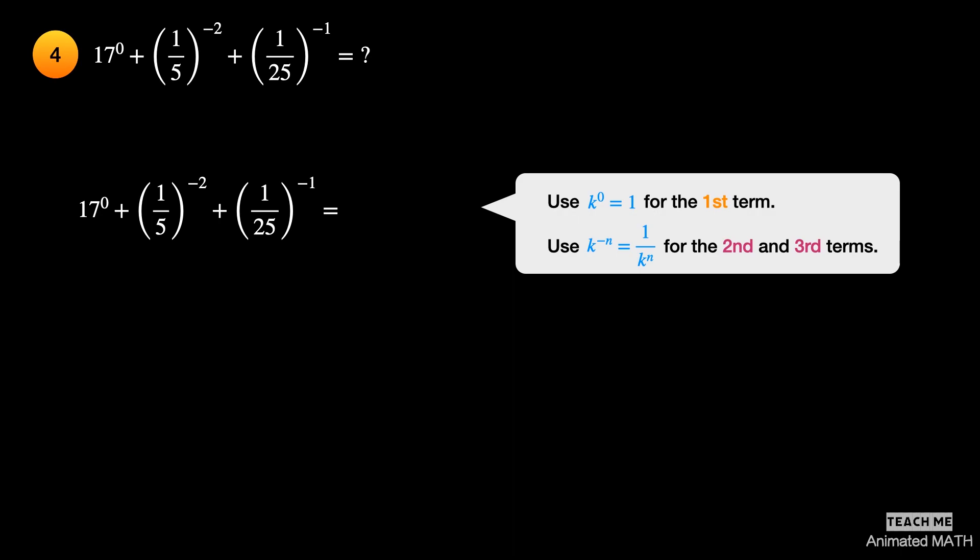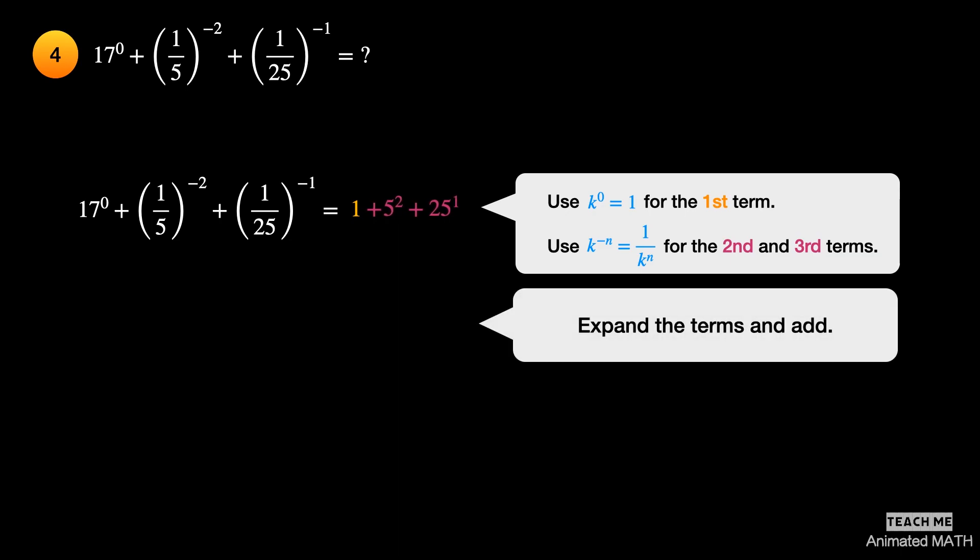Use the 4th property for the 2nd and 3rd terms, because they have negative exponents. Expand the terms and add them. The final answer is 51.